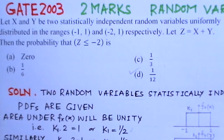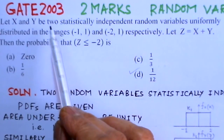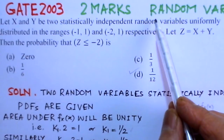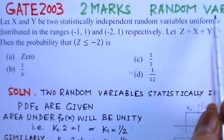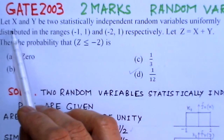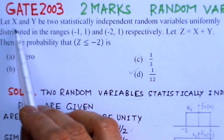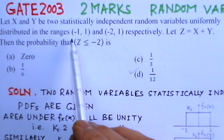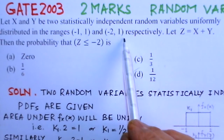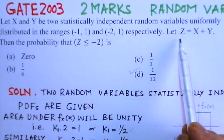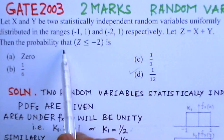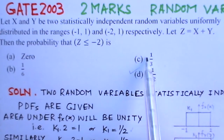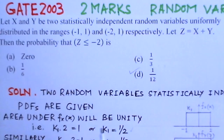This problem is from Gate 2003, worth 2 marks, in the area of probability and random variables. It says that let X and Y be two statistically independent random variables uniformly distributed in the range from minus 1 to 1 and minus 2 to 1 respectively. Let Z equal X plus Y. Find the probability that Z is less than or equal to minus 2, with four options given.